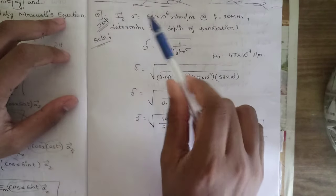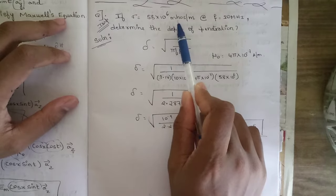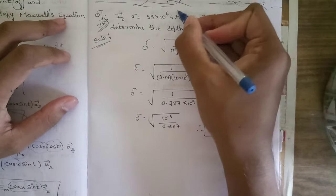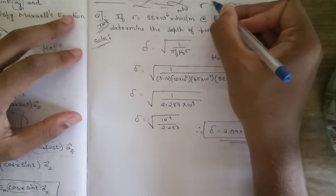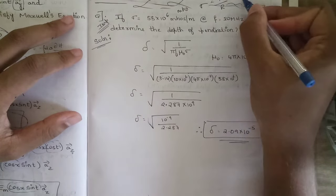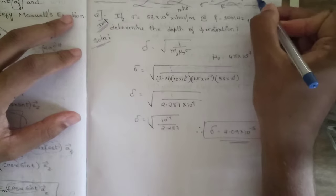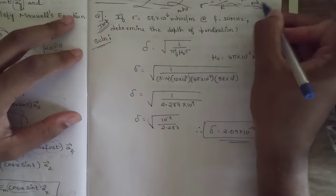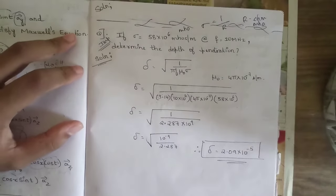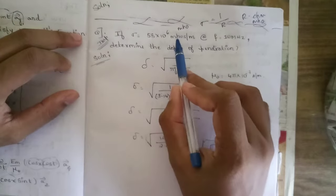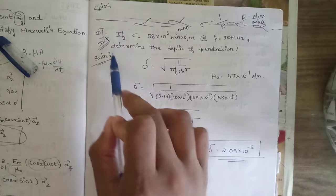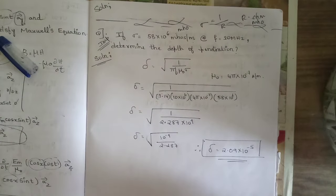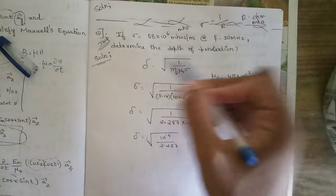Now let's solve a direct problem. Given: σ = 58 × 10⁶ mho/m (mho is the unit for conductivity, since conductivity = 1/resistance, and resistance is in ohms), and frequency f = 10 MHz. Determine the depth of penetration in free space.